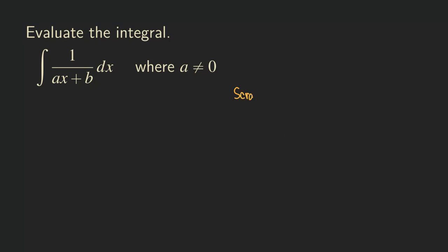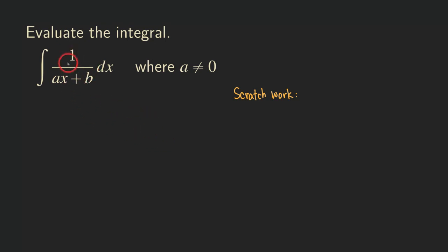Let's do some scratch work here. We are going to think about what happens when we differentiate a function and how we get this expression. What kind of function, when you differentiate, will produce this as the derivative? Because we see 1 over some expression, we are going to guess that it will involve the ln function.